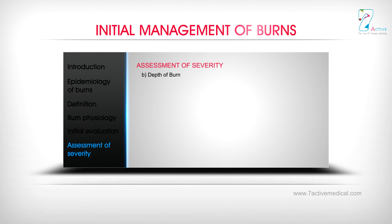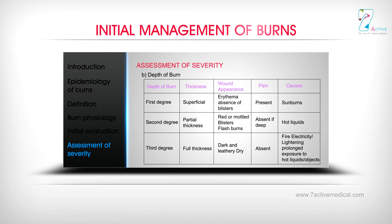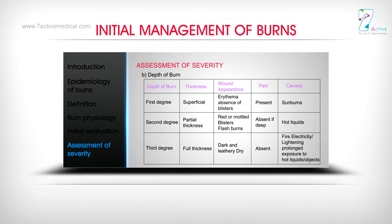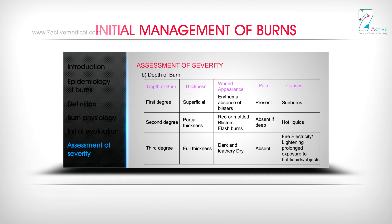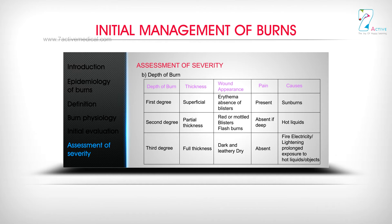Depth of burn classification: First degree — superficial, erythema, absence of blisters, painful; caused by sunburns. Second degree — partial thickness, red or mottled with blisters, painful; caused by flash burns or hot liquids. Third degree — full thickness, dark and leathery, dry, absent pain; caused by fire, electricity, lightning, or prolonged exposure to hot liquids or objects.